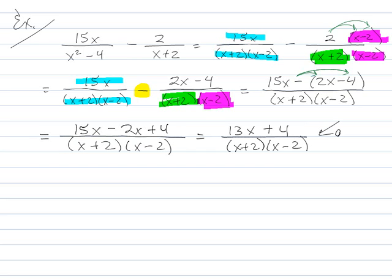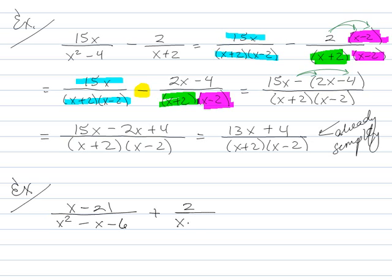Anytime you have a problem like this, you always want to look and make sure you can't reduce it. This is already simplified as well as it's going to go. I can't simplify this algebraically any more than it's already done. So that's about as bad as it gets. Let's try something a little bit more interesting. Say we have x minus 21 all over x squared minus x minus 6, plus 2 over x plus 2.